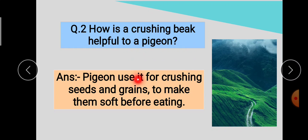Pigeon जो है, अपनी beak की help से, जो grains और seeds हैं, उनको crush करता है, और खाने से पहले उनको कैसा बना देता है? Soft. ठीक है.